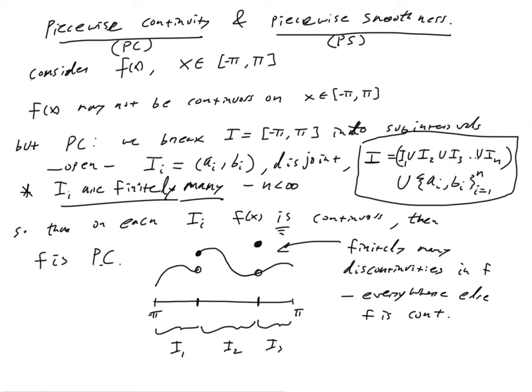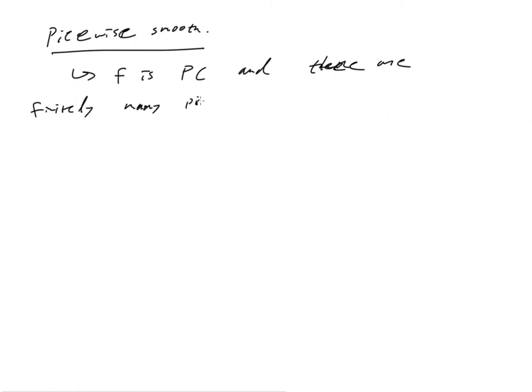So now we need one more definition, and it's actually quite simple. We need to talk about what does it mean to be piecewise smooth. The only additional requirement is that basically f is piecewise continuous, and there are finitely many points where df/dx is discontinuous.